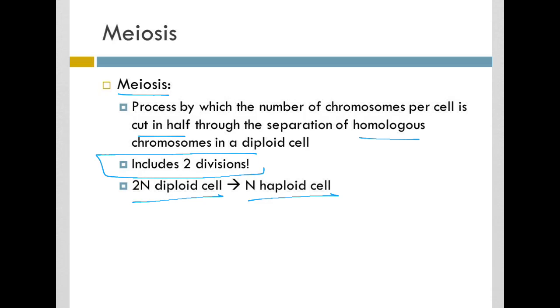And meiosis actually includes two divisions. And instead of the two cells you get in mitosis, you get four cells produced in meiosis.